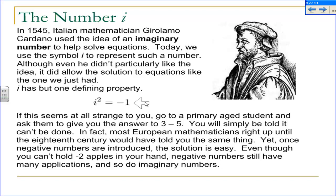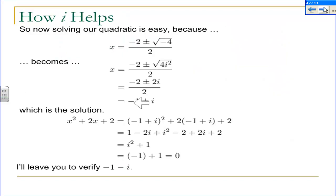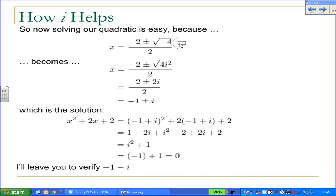At first it seemed kind of strange — I can't picture it. But there are ways of representing this abstract idea that we'll run into. And one of those applications is going to allow us to solve our formula here. Because if i² equals negative one, I can take the negative in the negative four and replace it with an i². From here on in, I just use my regular rules for algebra: take the square root, divide both terms in the numerator by two, and end up with negative one plus or minus i.